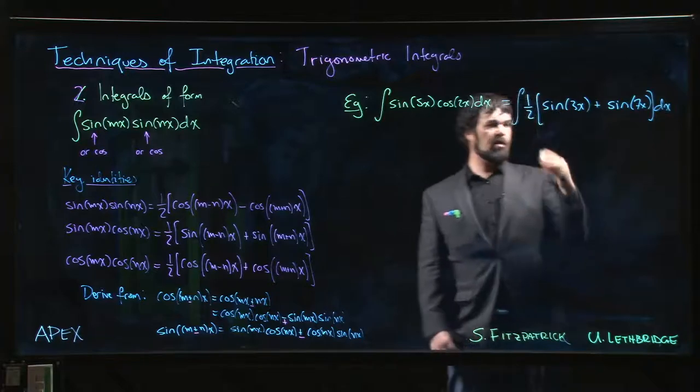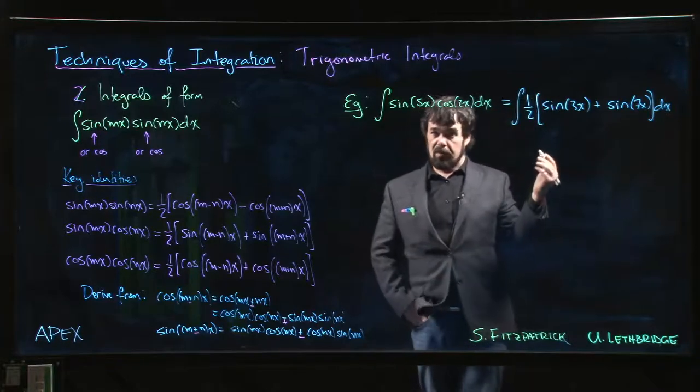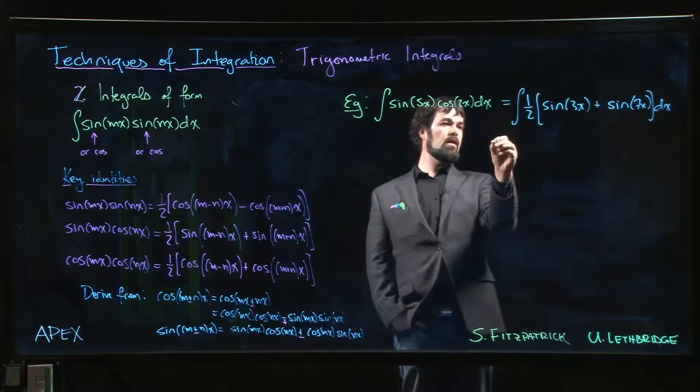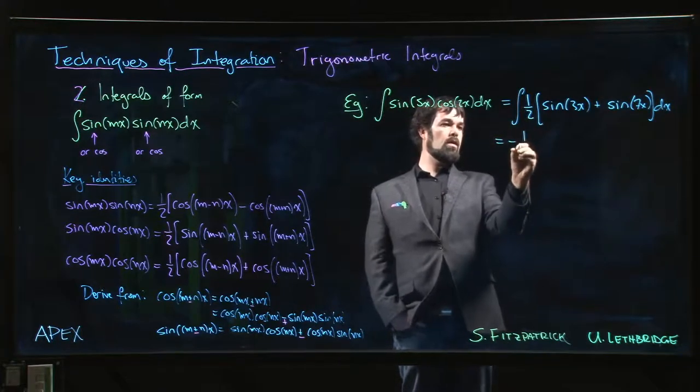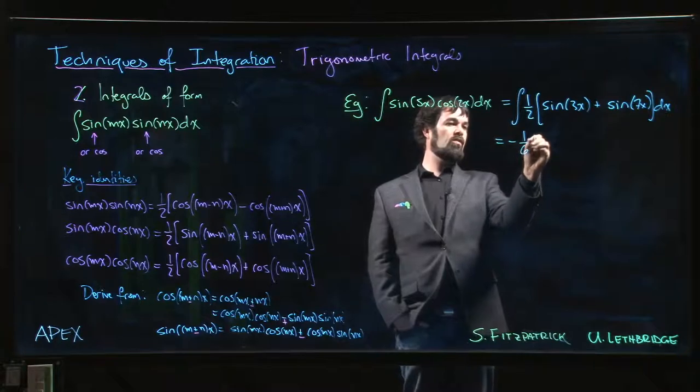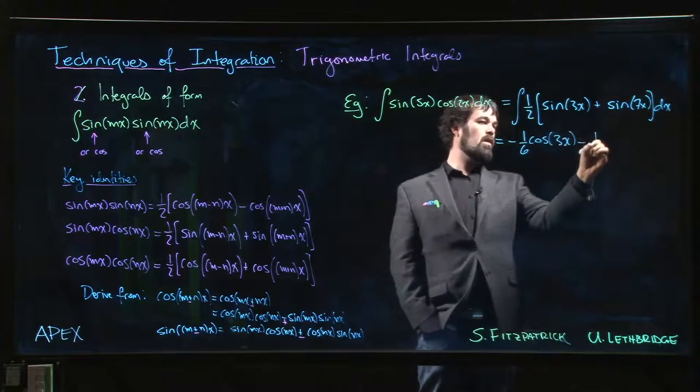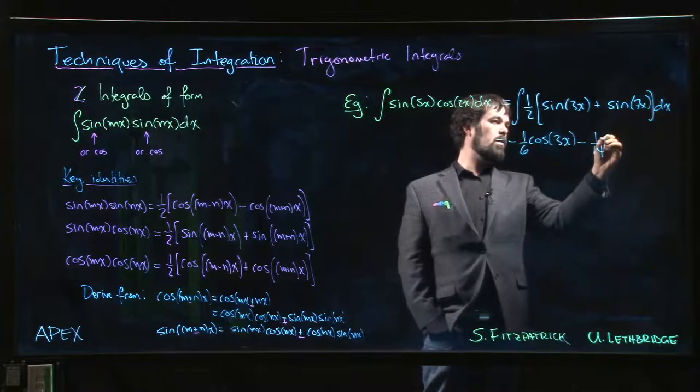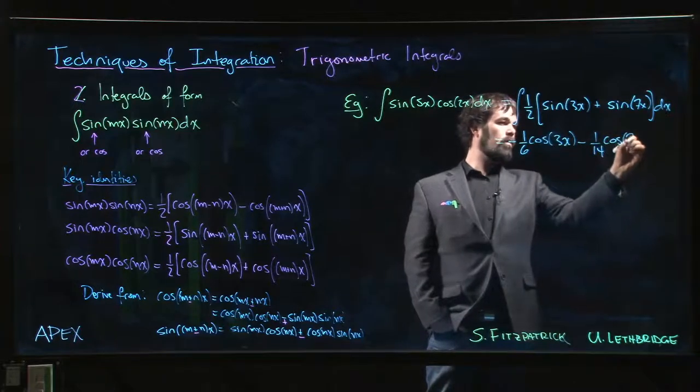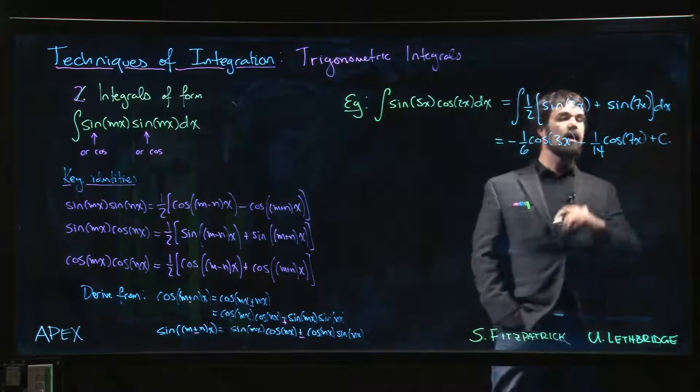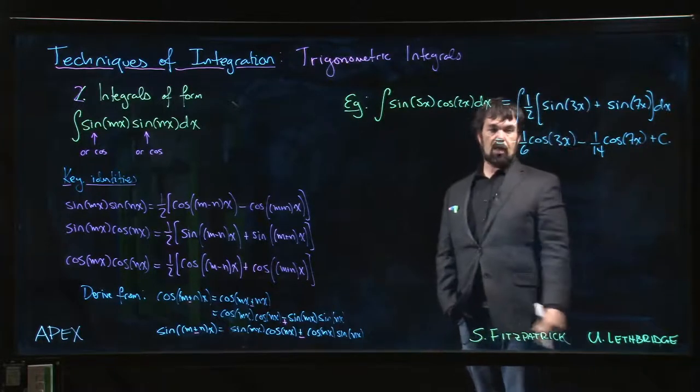And we know how to do these—I mean it's a simple u-substitution. At this point you probably don't even bother writing those substitutions down. We just say okay, so this is going to be minus one over 6 cos 3x minus one over 14 cos 7x plus c. And yeah, you have it.